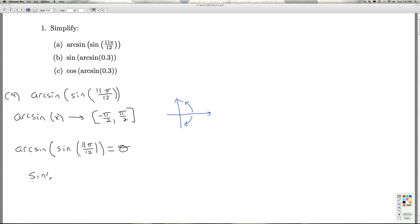But theta has to be between negative π over 2 and π over 2. So, where is 11π over 12? If I plot that in standard position,